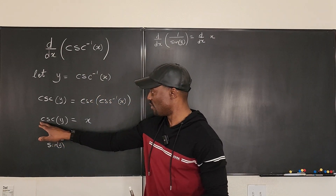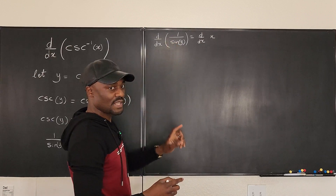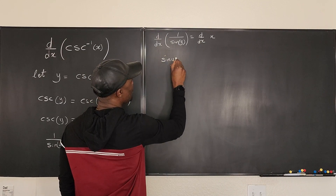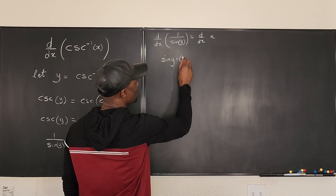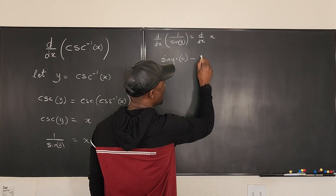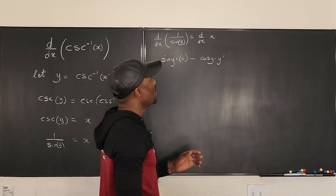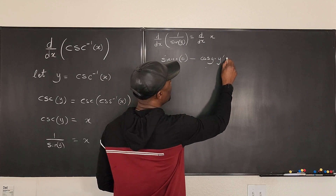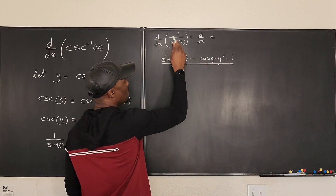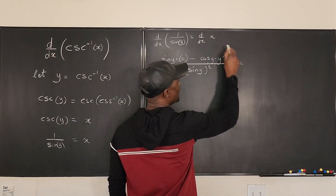If you have the derivative of cosecant y memorized, just go ahead and use it. Otherwise, apply the quotient rule to 1 over sine y. You get sine y times the derivative of the numerator (which is 0), minus the derivative of sine y — that's cosine y times y prime by implicit differentiation — multiplied by 1, all over sine squared y. The right-hand side is 1.